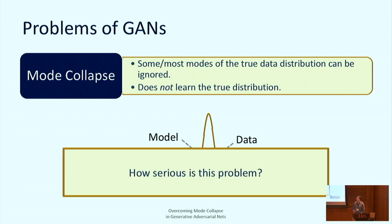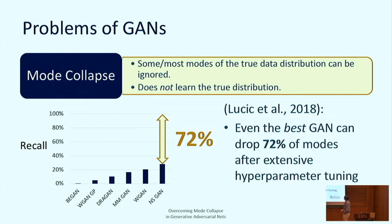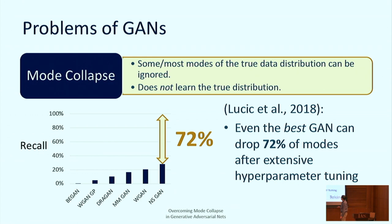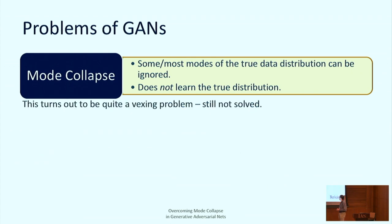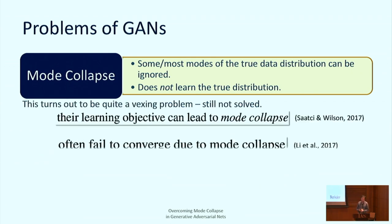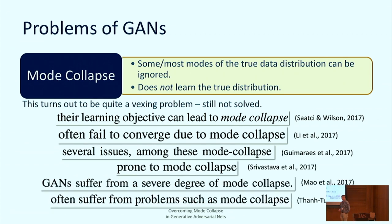How serious is this problem? A paper from Google Zurich studied empirically how bad mode collapse is. It turns out that even for the best GAN, we can drop 72% of the modes. They did this on synthetic datasets where both precision and recall can be precisely computed. Interestingly, the GAN that achieves the best recall is actually the original GAN — the later improvements are essentially trading off recall for precision. This is a challenging problem that still hasn't been solved.